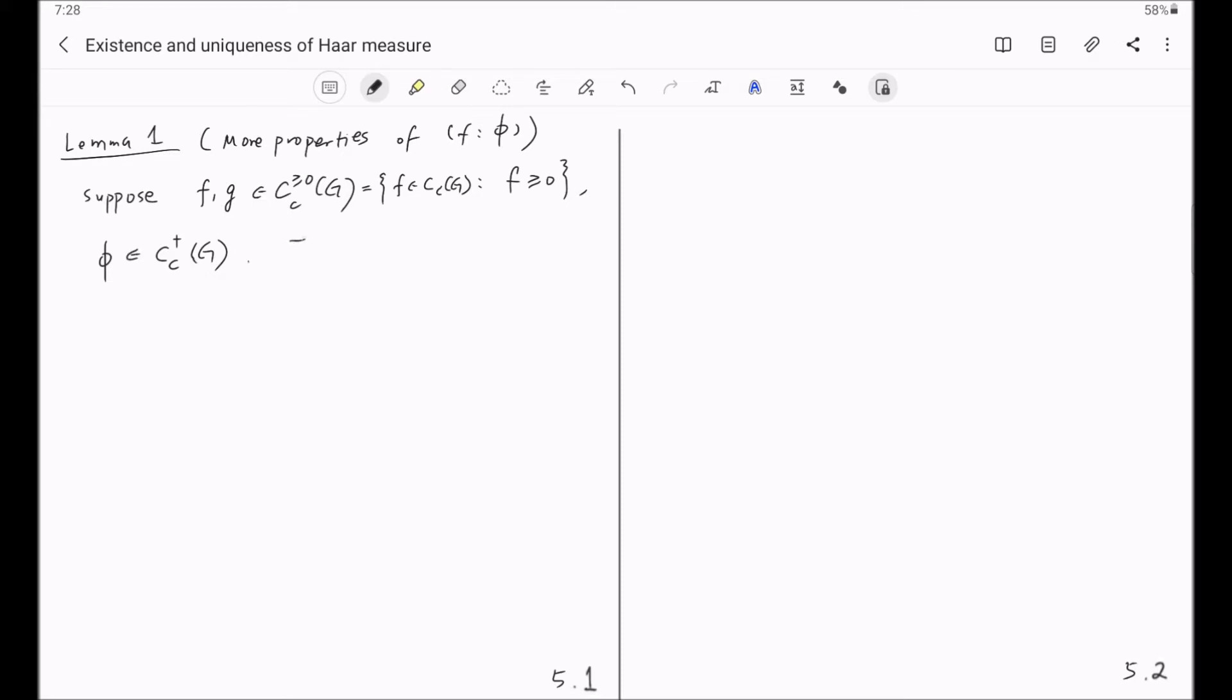Then, with these assumptions, we have, first, F column V is equal to the left translation of F column V. Namely, any left translation does not change this Haar covering number with respect to functions.